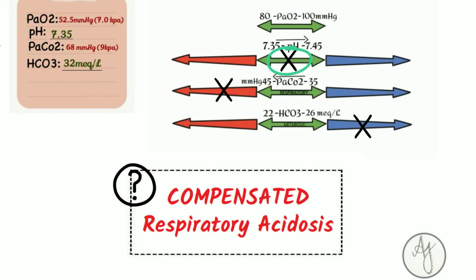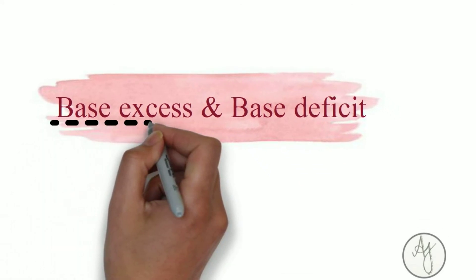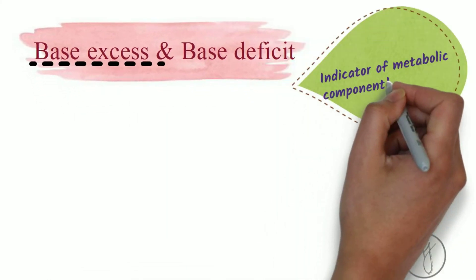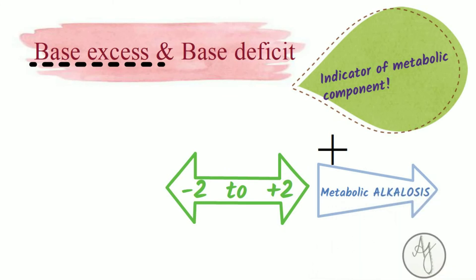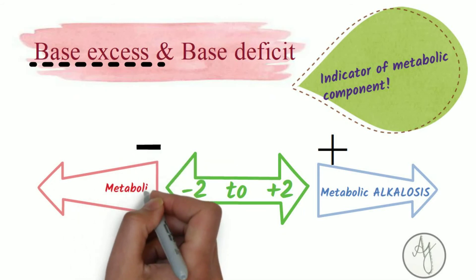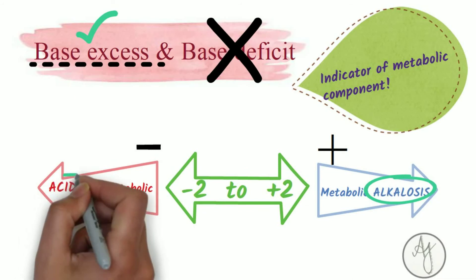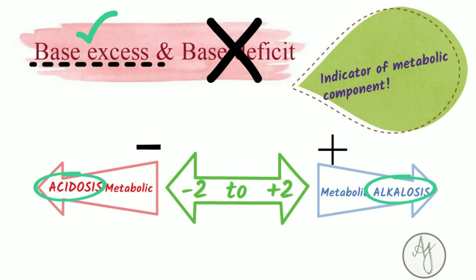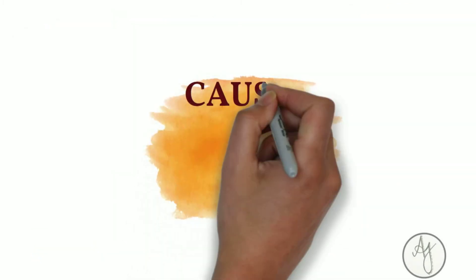Let's discuss base excess and deficit. On an ABG strip, base excess is mentioned — it's simply an indicator of the metabolic component. The normal base excess is between −2 to +2. The more positive it becomes beyond +2, the more it indicates metabolic alkalosis. The more negative it becomes — base deficit — the more it indicates metabolic acidosis. The more positive it is, the more alkaline; the more negative, the more acidotic. Its use in ABG is controversial, but that's the essential information about it.